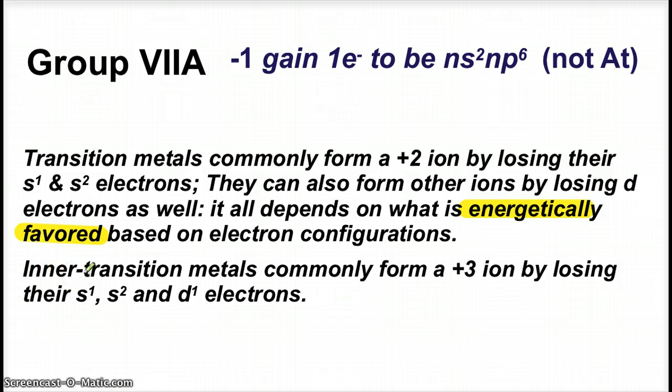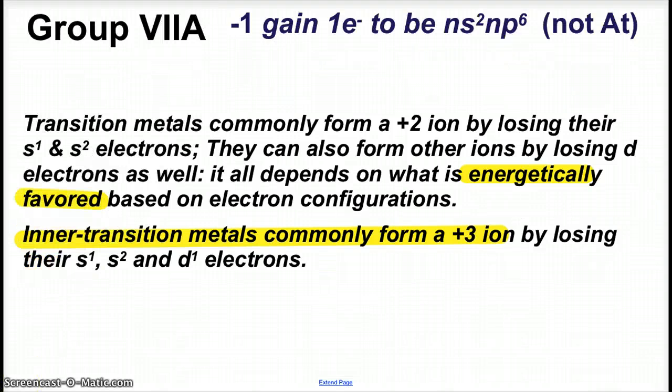At the bottom of the table are inner transition metals. They form a lot of plus three ions because when you look at the periodic table, they can lose their s1 and s2 electrons as well as their first d electron. Just some other ion trends you might want to be aware of. This concludes the ionic portion of our bonding discussions. We'll be transitioning to molecular and covalent bonds. Hope this helps, see you soon.